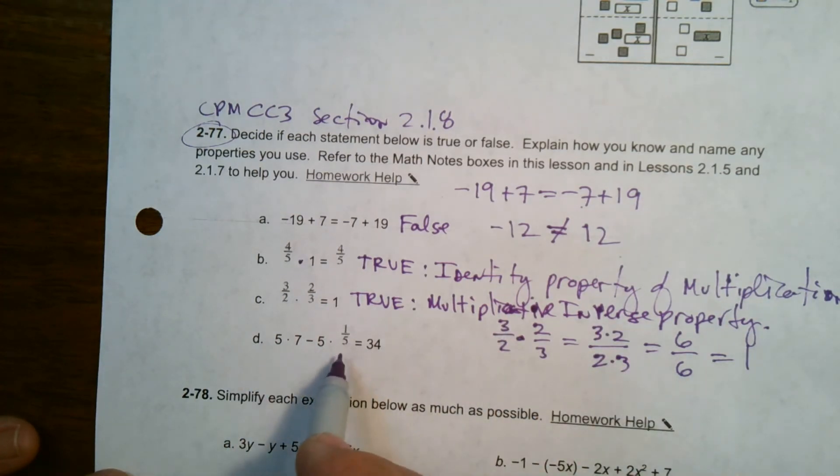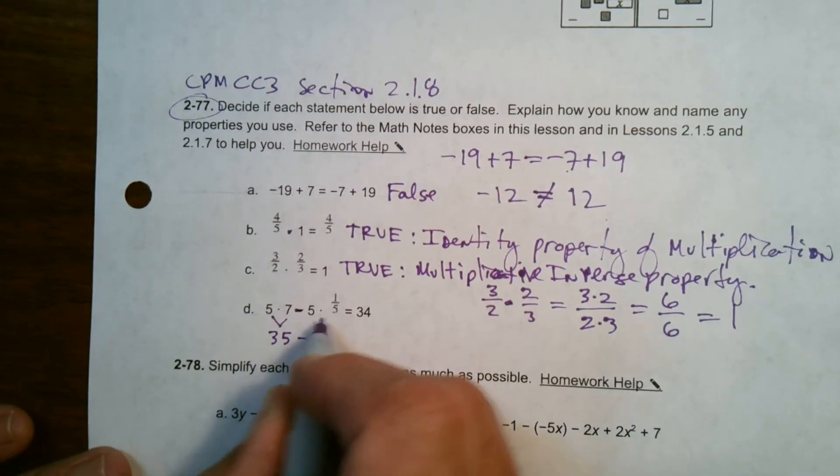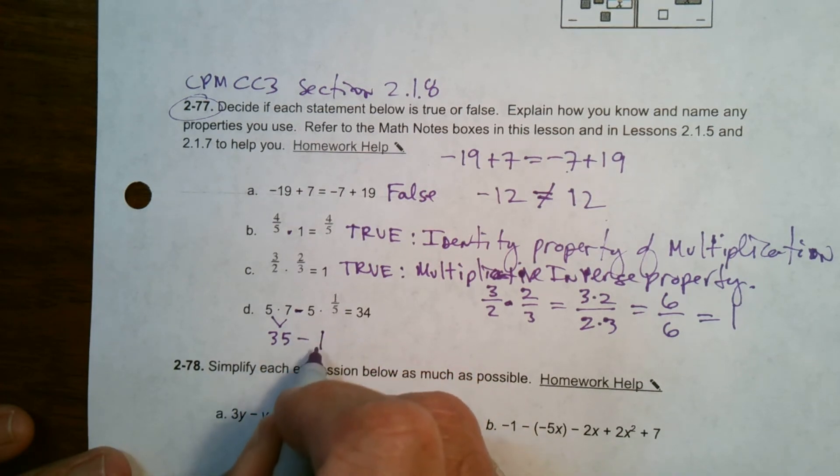And then the last one here: 5 times 7 minus 5 times 1 fifth equals 34. We've got to determine that. So order of operations, I always multiply before I subtract. Do the multiplication here. 5 times 7 is 35 minus 5 times 1 fifth. 1 fifth of 5 is 1, so 5 times 1 fifth is 1.